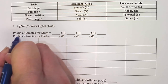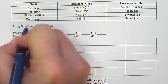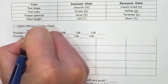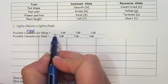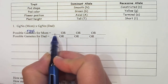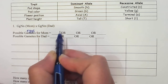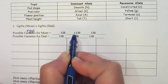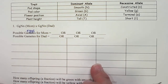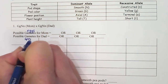Students sometimes get confused when it says 'possible gametes for mom.' This means the eggs that mom creates during meiosis are going to have one of each letter — one G and one N. We need to look at all the possible combinations of eggs she can offer into the Punnett square. The same applies to dad, whose gametes would be called sperm.